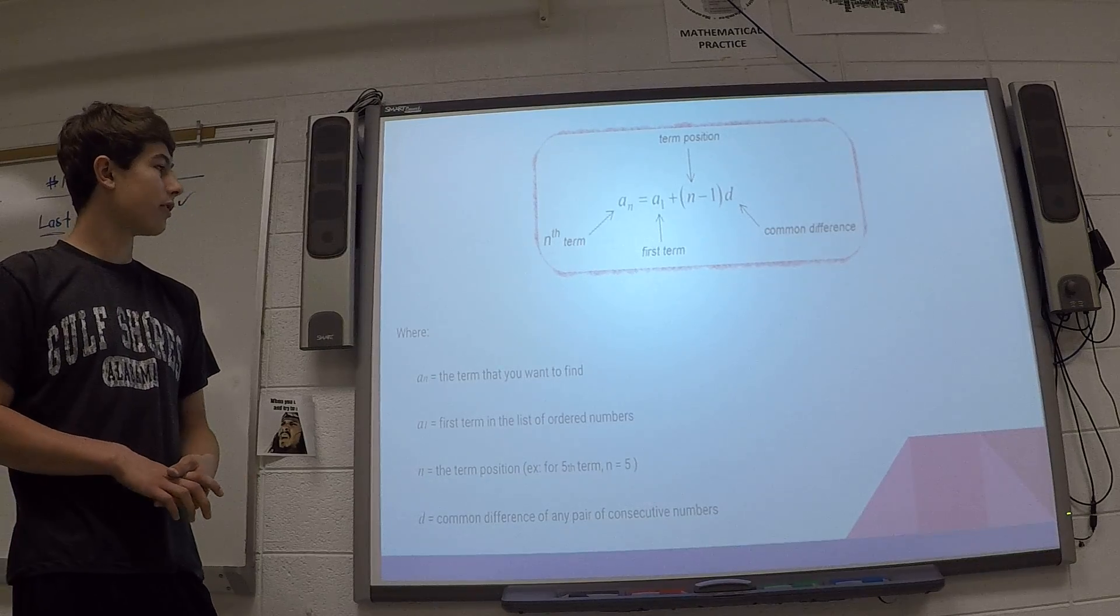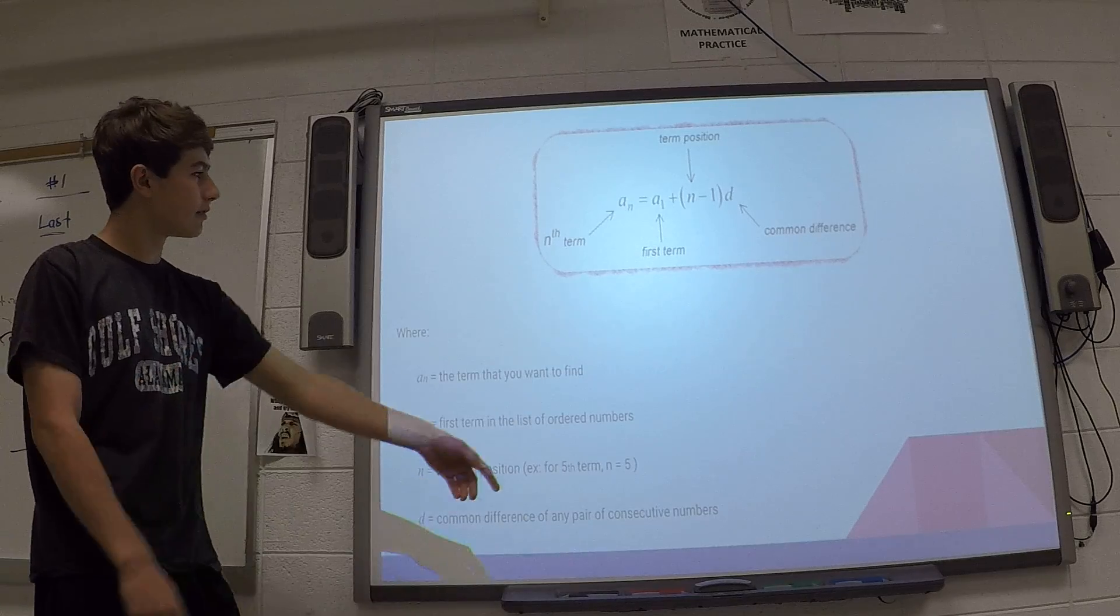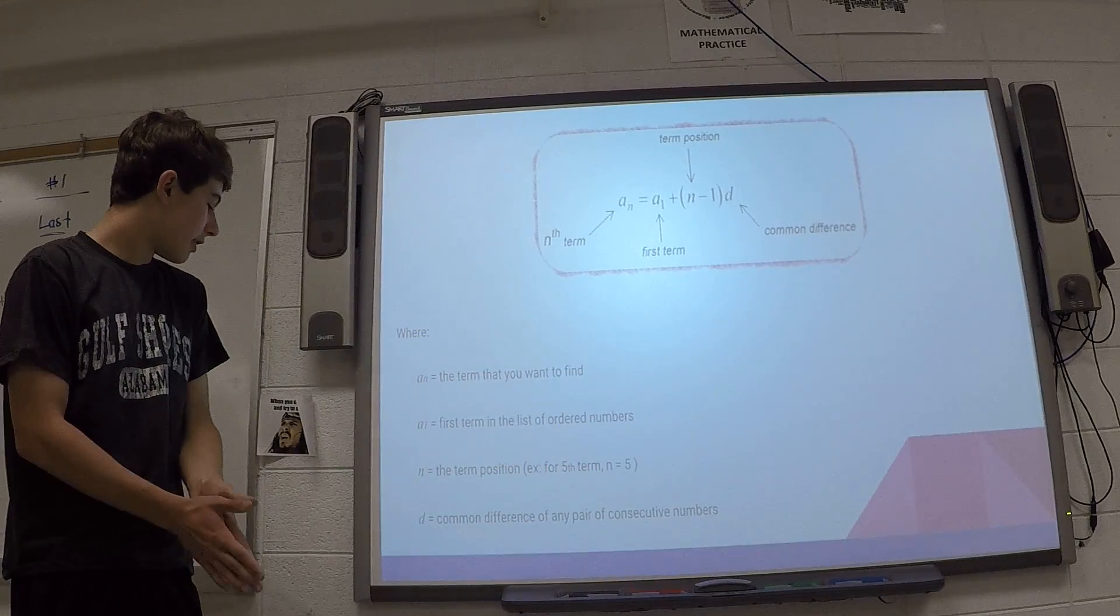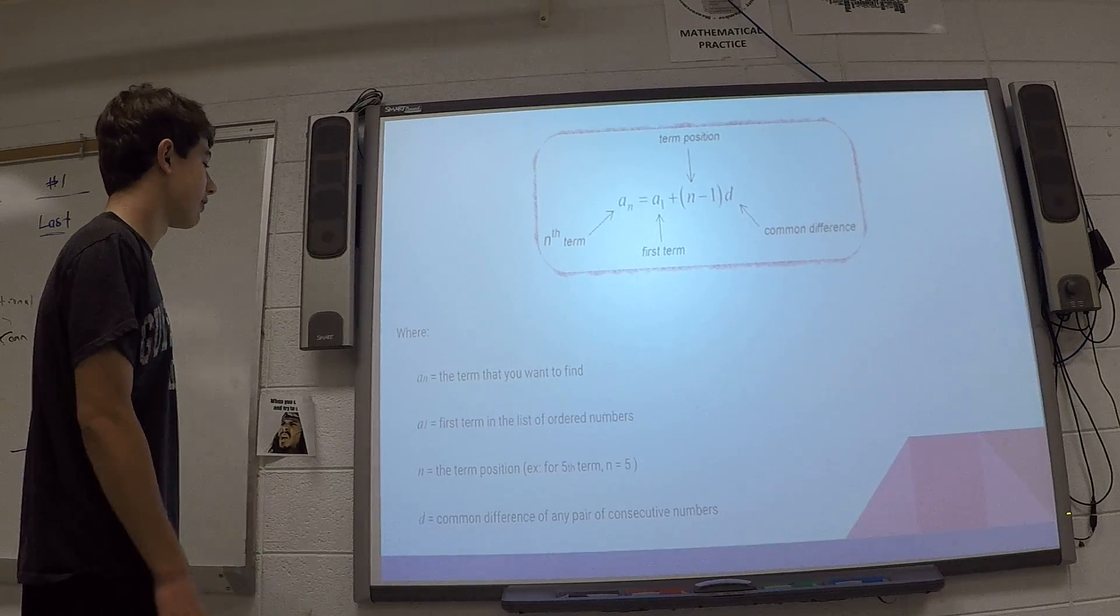n is the term position, so the fifth term would be an5, or just n, it's right there. And then d is the common difference, so the difference between your first and the term that you are trying to find.